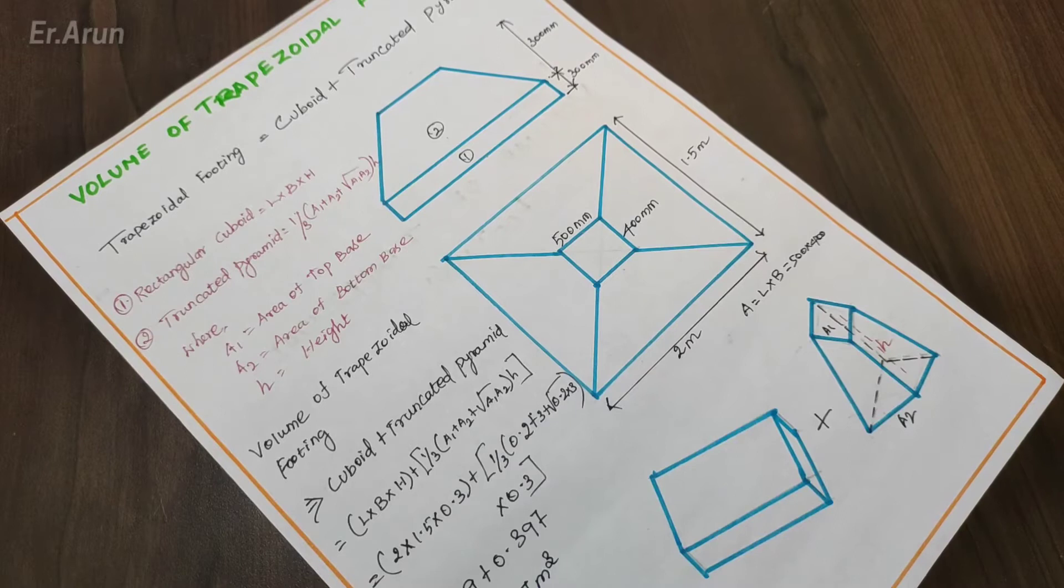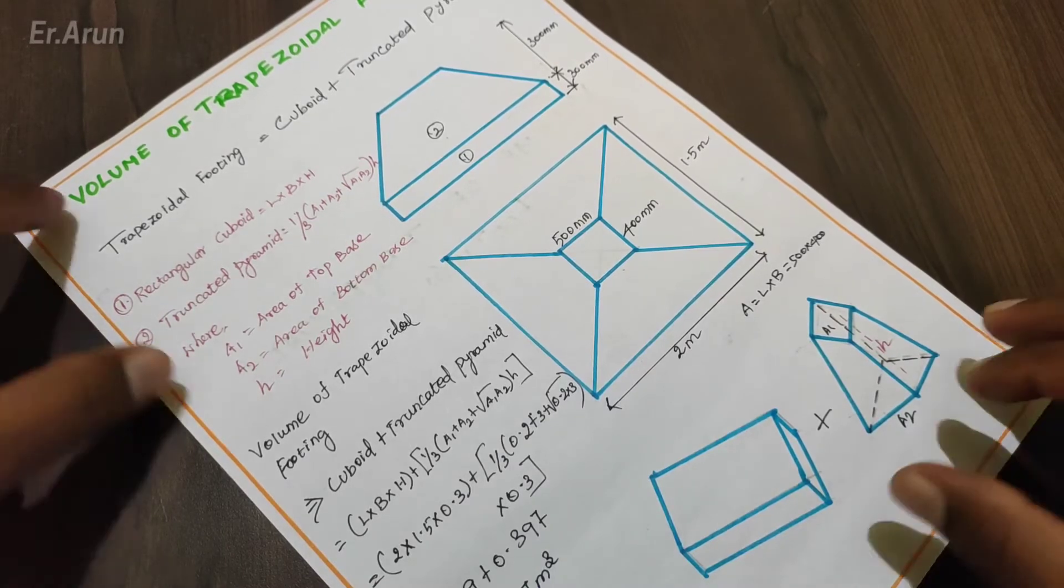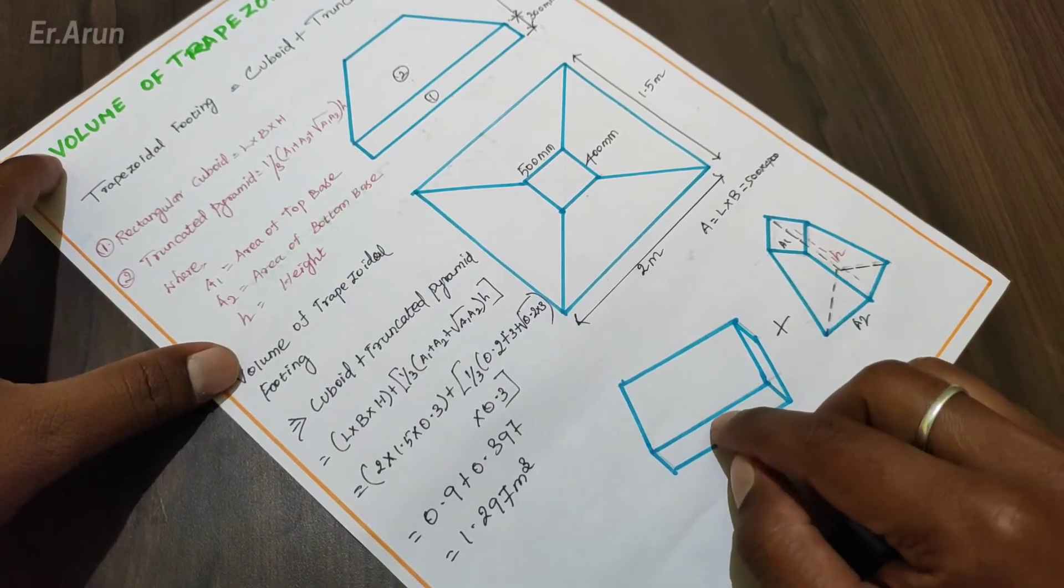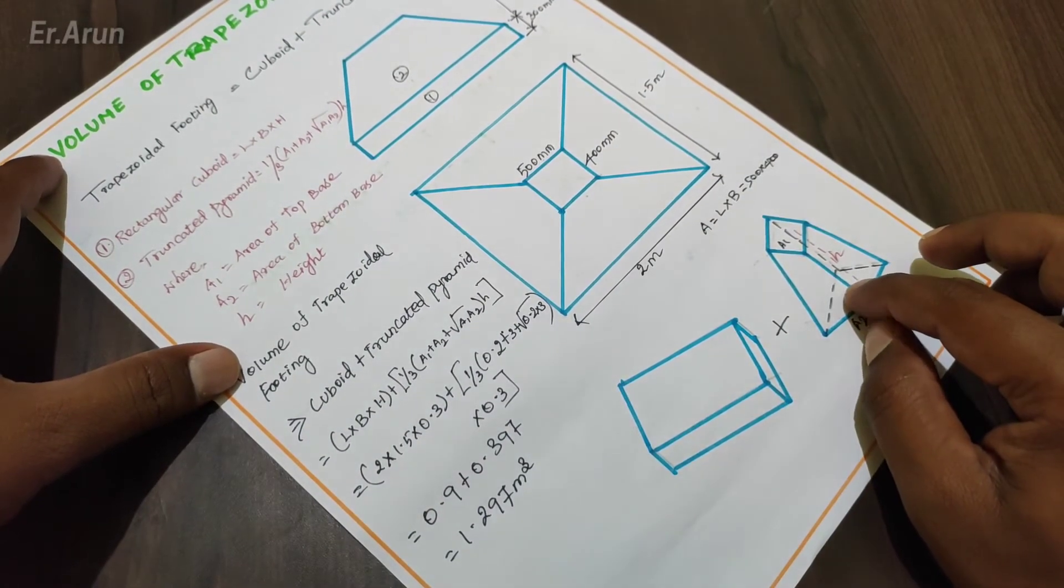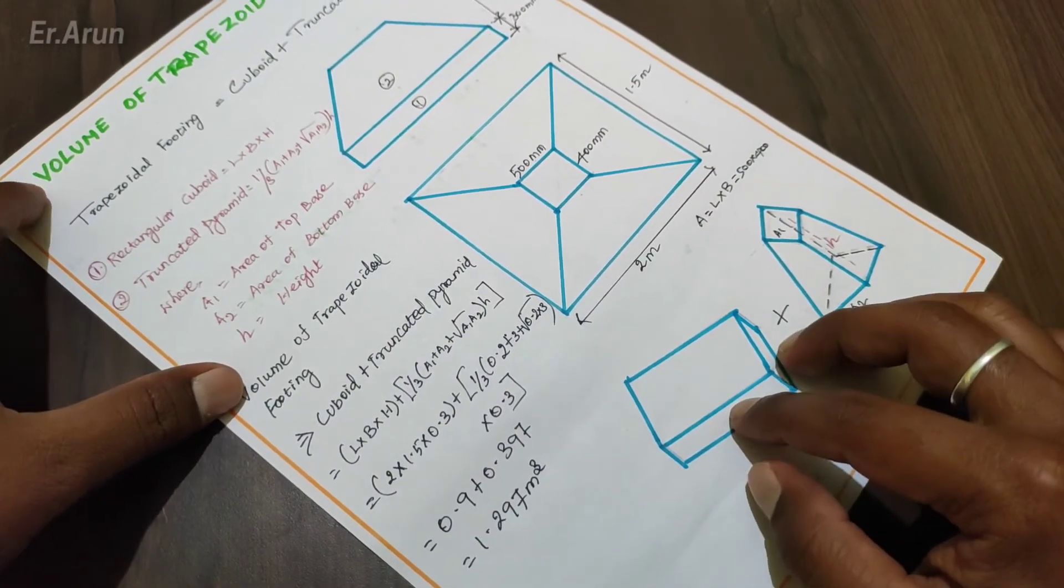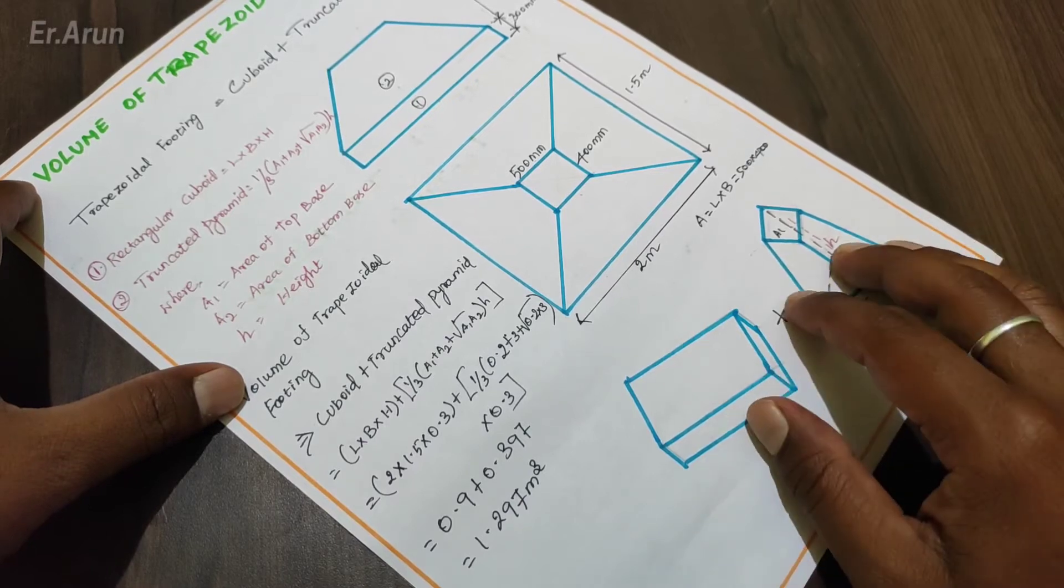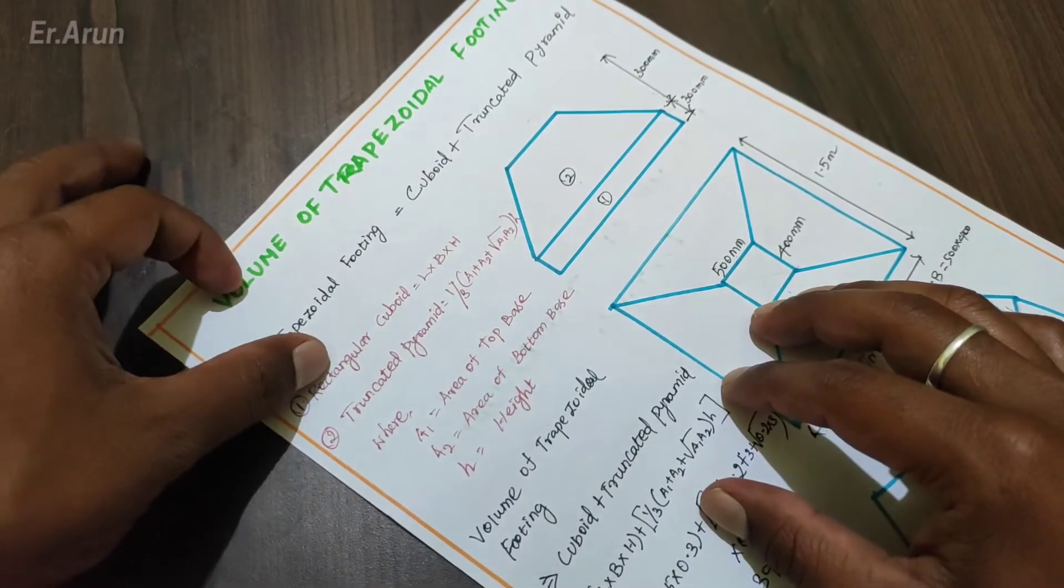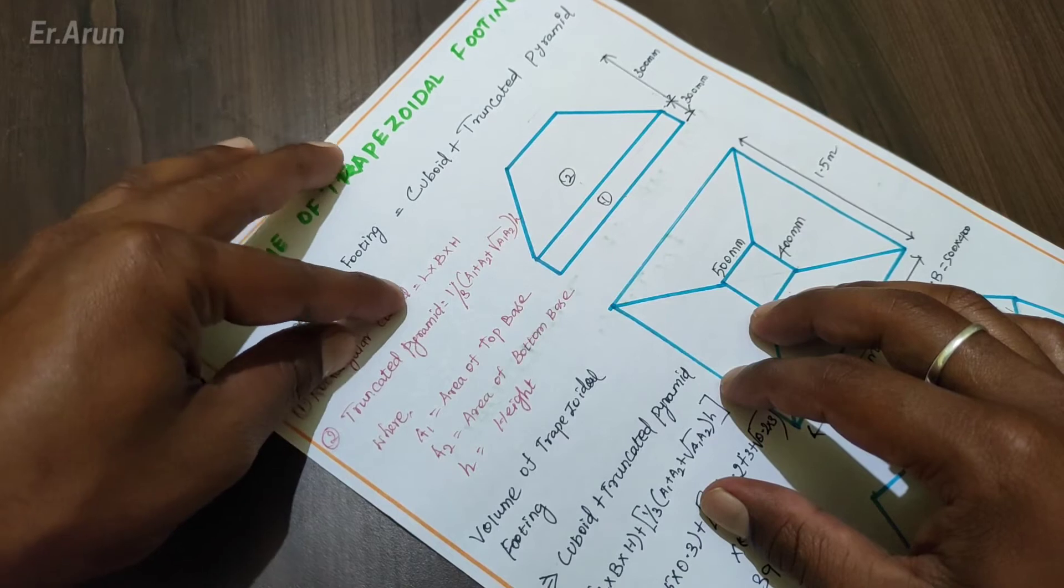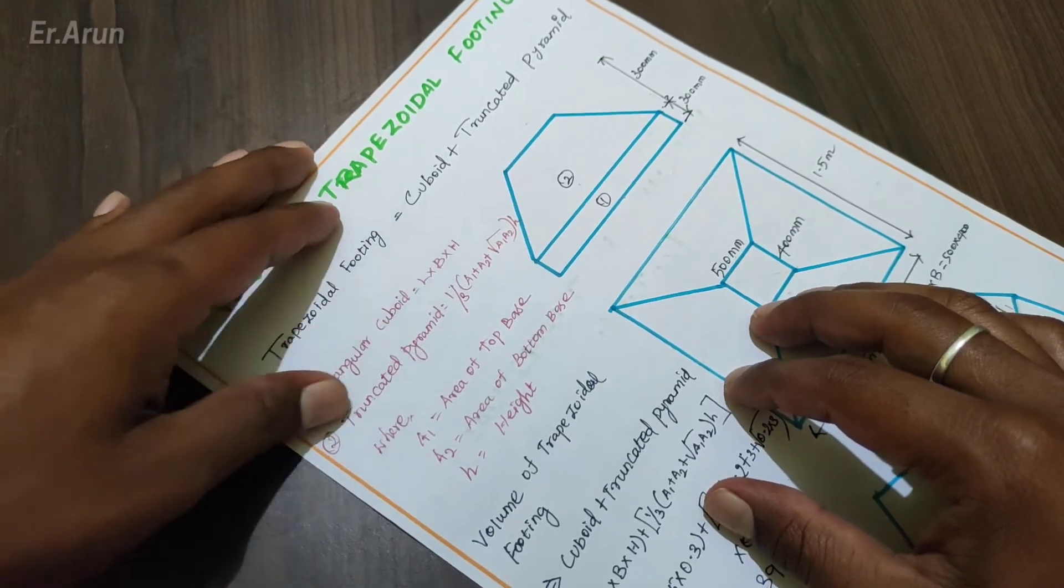Here, trapezoidal footing is cuboid plus truncated pyramid. These two form the trapezoidal footing. This is the cuboid and truncated parameter. That is the rectangle cube. These two are separate forms. Rectangle cube is L into B into h.